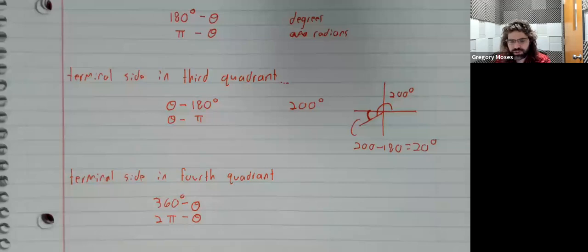Finally, if the angle is in the fourth quadrant, the reference angle is 360 degrees minus the angle, or 2π minus the angle if we're working in radians.